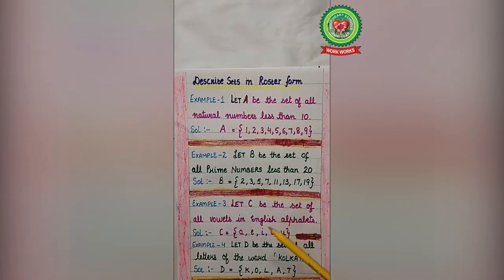Let's take another example. Let C be the set of all vowels in English alphabets. In English alphabets, there are 5 vowels. These are A, E, I, O, U. Rest alphabets are known as consonants. So here name of the set capital C, start with the curly bracket. We will write a, e, i, o, u all in small letters, curly bracket close.